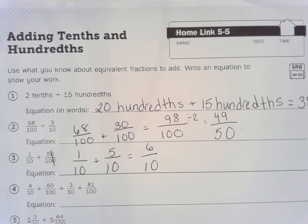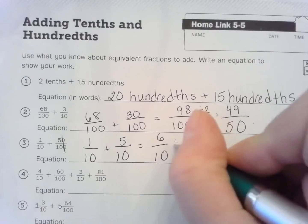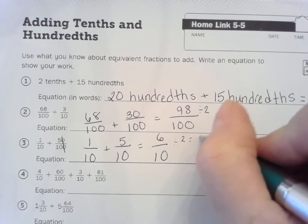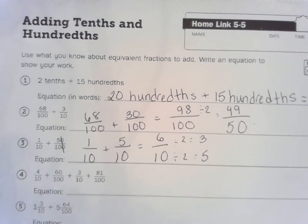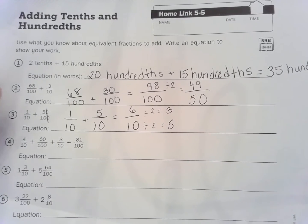And look, what do you notice about 6 tenths? 6 and 10 are both divisible by 2. So 6 tenths, 6 divided by 2 equals 3, 10 divided by 2 equals 5. So 6 tenths equals 3 fifths, there we go.